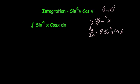So if you integrate sine to the power of 4x cos x, you're going to get a 5th sine to the power of 5x using the reverse chain rule.